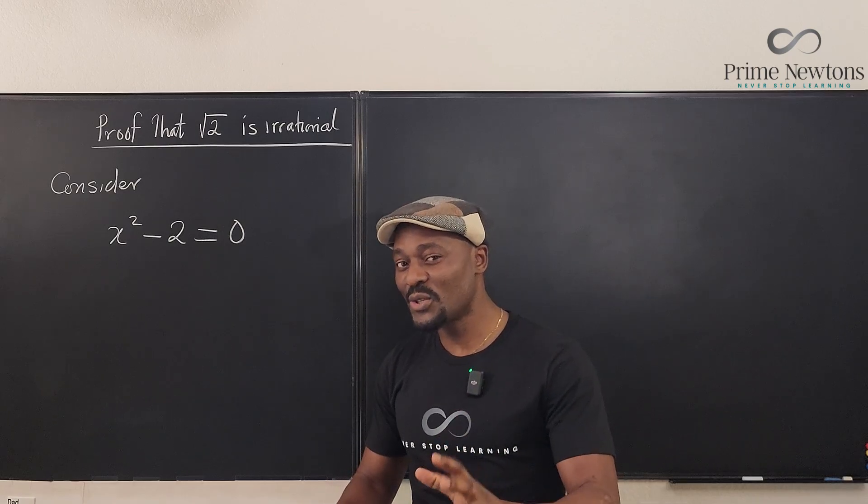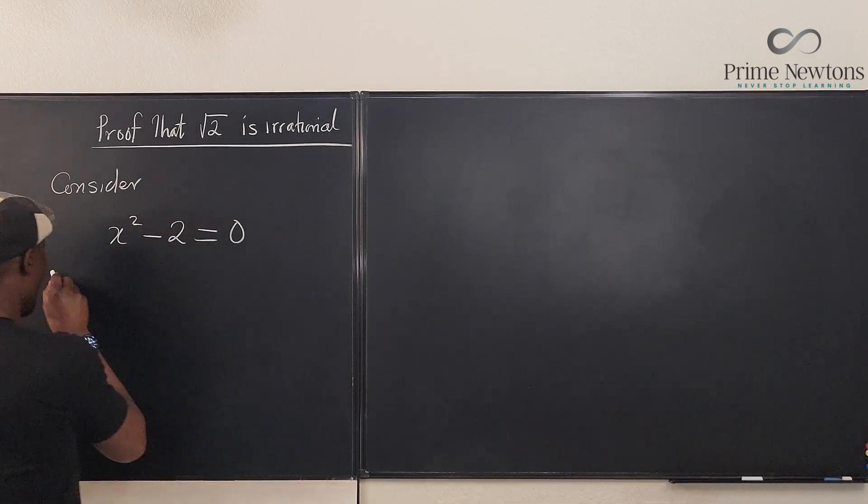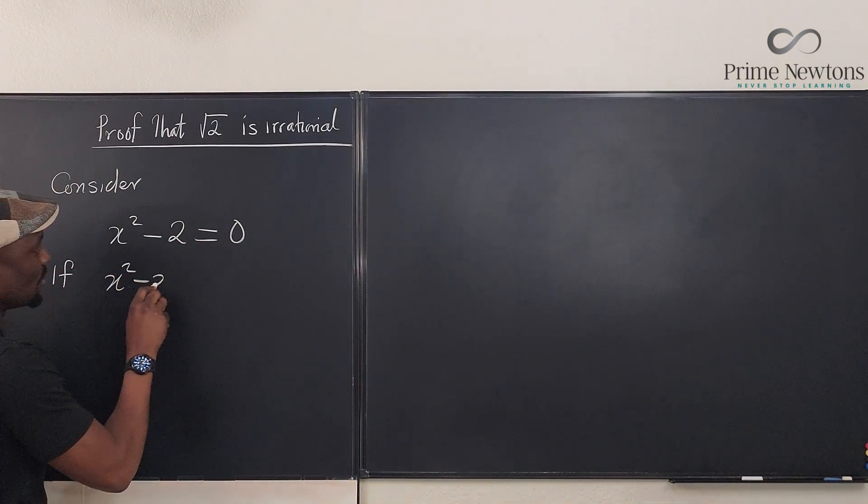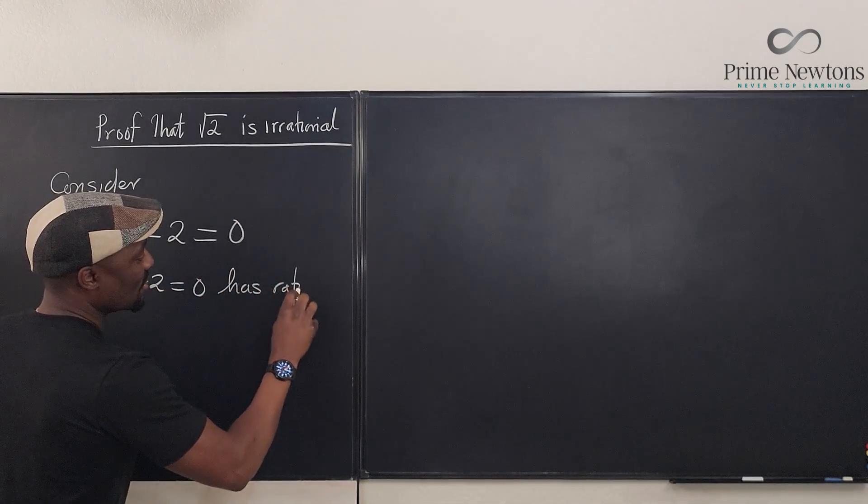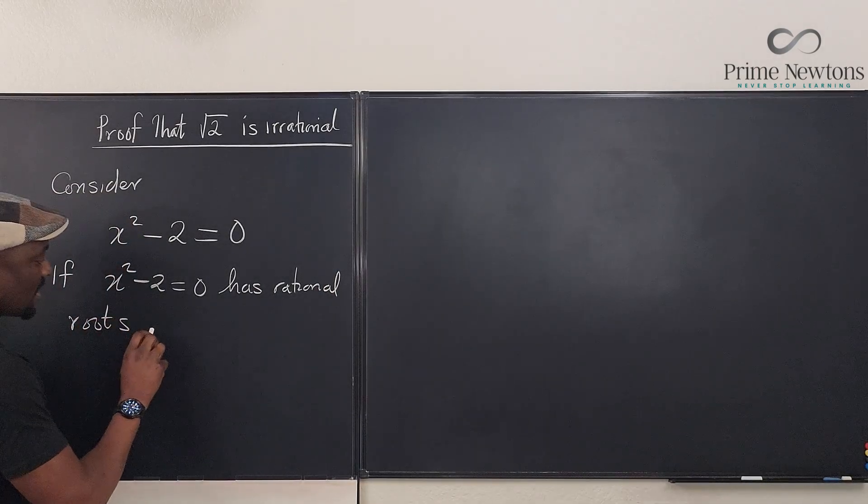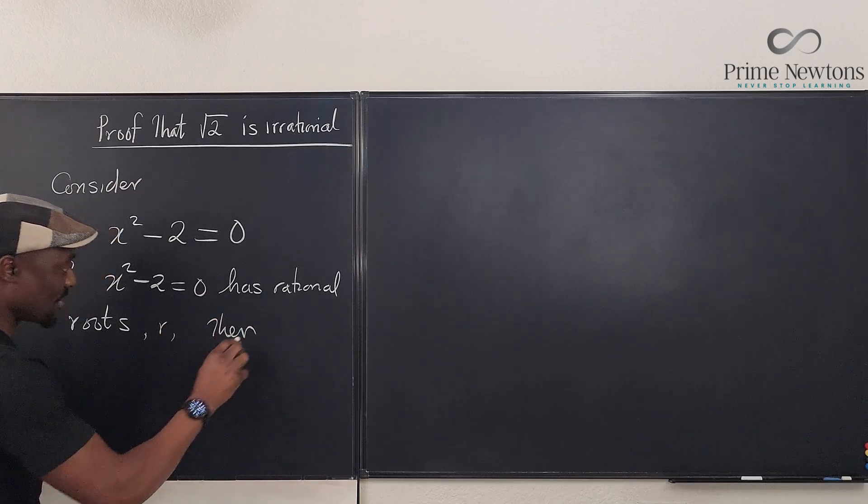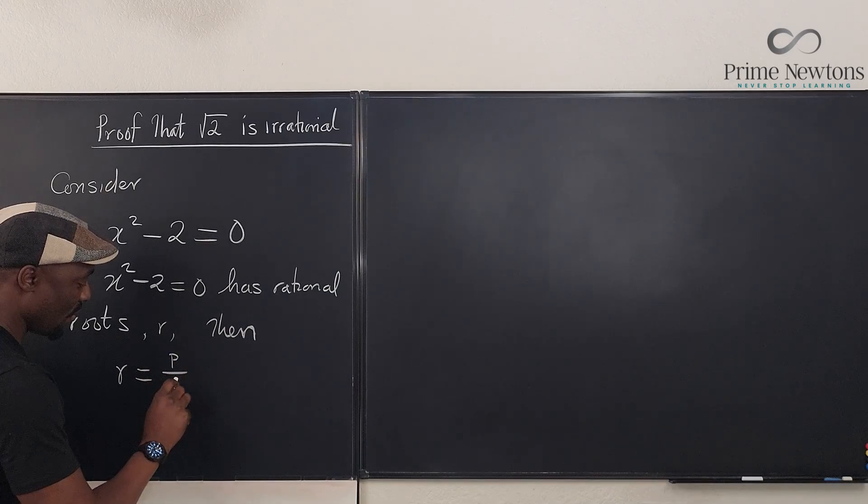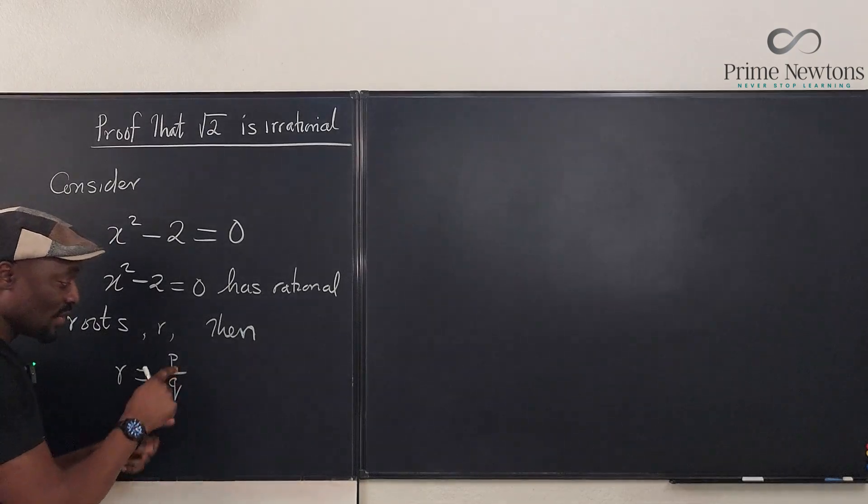if this equation has rational roots, then the rational roots must obey this rule. So we say if x² - 2 = 0 has rational roots r, then the rational roots must be equal to p over q.